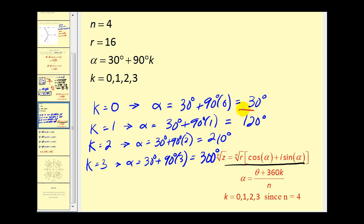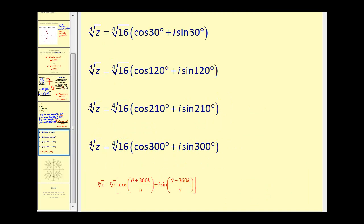We're going to use this formula four times using these four angles. We know r = 16 and n = 4. We need to evaluate the trig expressions and multiply by the fourth root of 16, which is 2.